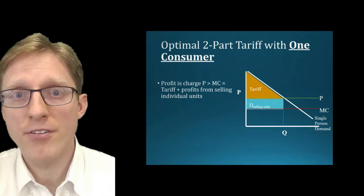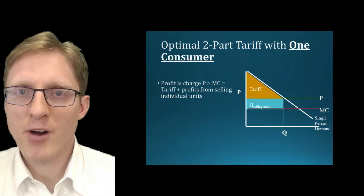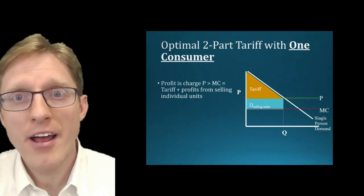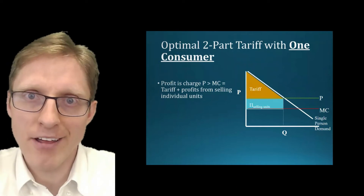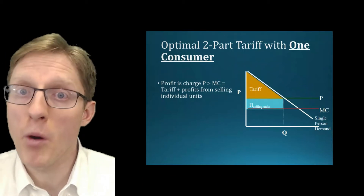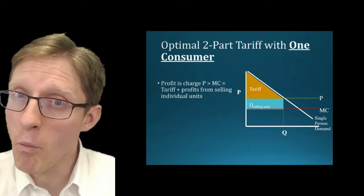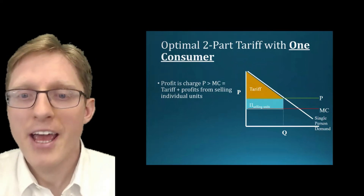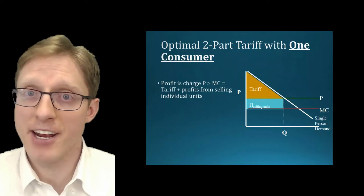If there were no tariff or fixed fee, consumers would be left with consumer surplus equal to this shaded orange area — the triangle that lies above the price and below the single person's inverse demand. Now if the firm wants to extract this consumer surplus as additional profit, they could do so with a two-part tariff — specifically by charging a tariff equal to that consumer surplus area minus one penny, leaving the consumer with just one penny of surplus. The consumer is not thrilled, but they're still better off earning that one penny rather than not buying at all and earning zero, so they would do it.